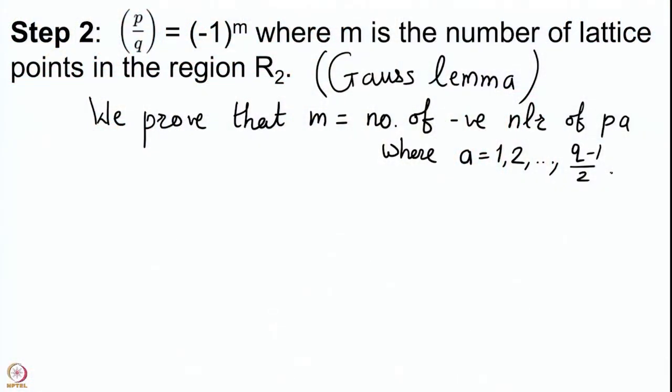We look at p, 2p, 3p and so on up to ((q−1)/2)·p. We take their numerically least residues modulo q and see how many are negative. The numerically least residues range from −q/2 to q/2, which is why we had −q/2 in the equation for region R2. The negative ones go from −q/2 to 0. So we prove there is a bijection between the lattice points in R2 and the negative numerically least residues of multiples of p.